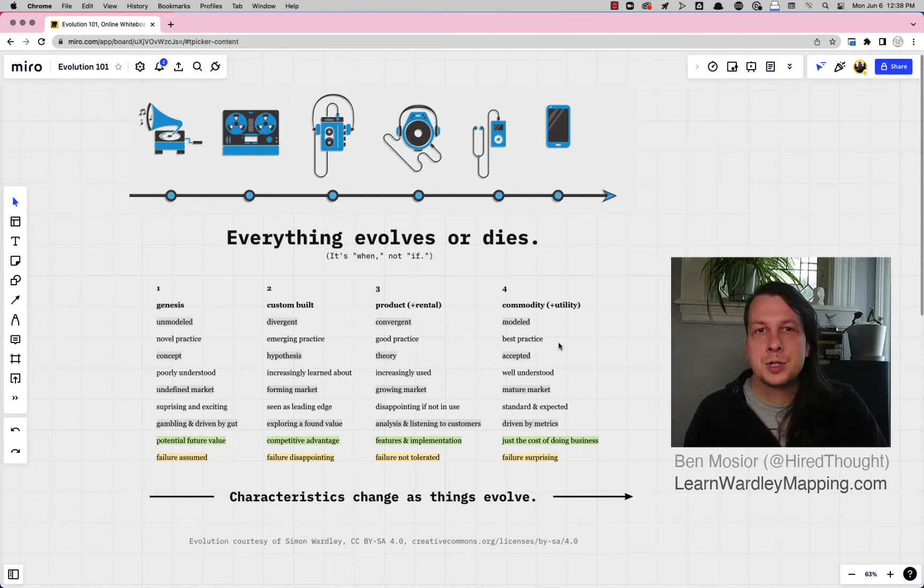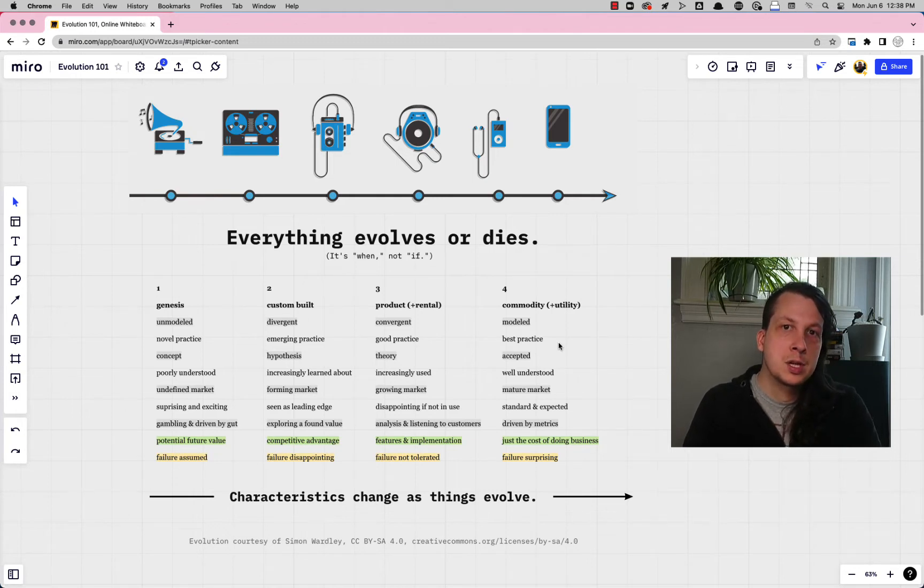Hi there, my name is Ben Moser. I run LearnWardleyMapping.com and today I'd like to talk a little bit about evolution in Wardley mapping. I got a question recently about how to use the characteristics as you're making a Wardley map and how to think about evolution on the Wardley map.